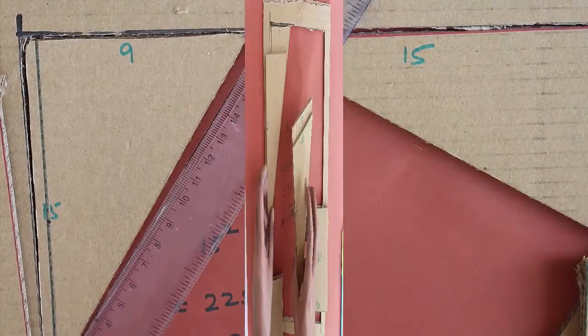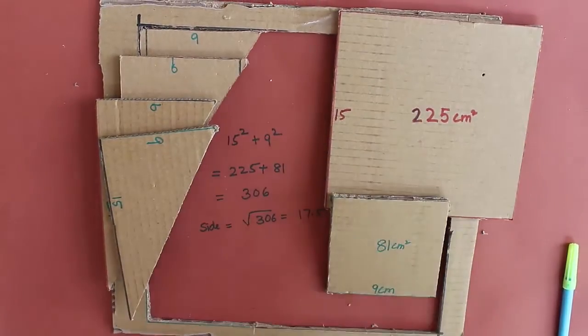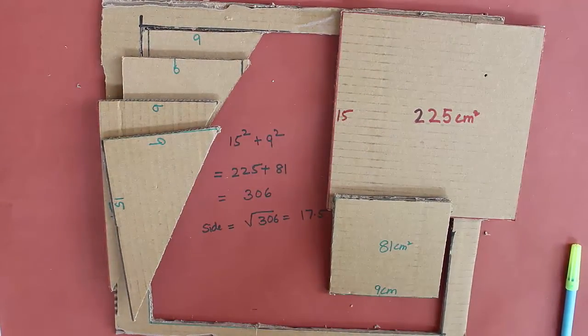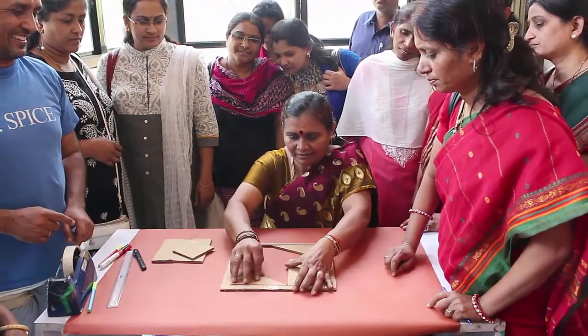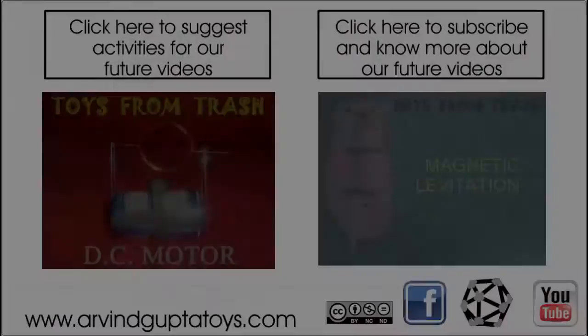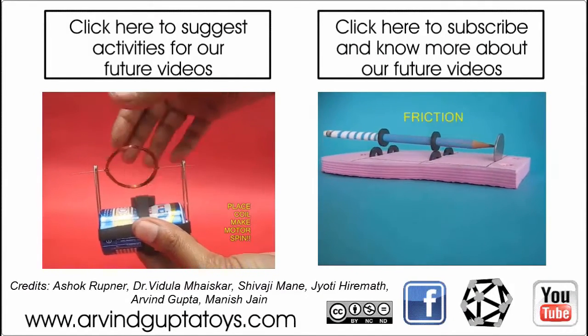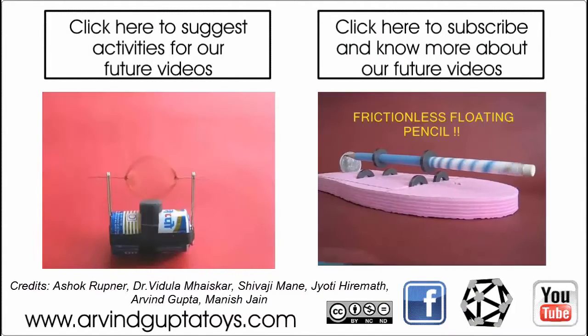In this activity we have seen that the sum of squares is a third square such that they form the sides of a right angle triangle. This is the Pythagoras theorem that we have shown here in this activity and proved. Hope you enjoyed it, thank you.